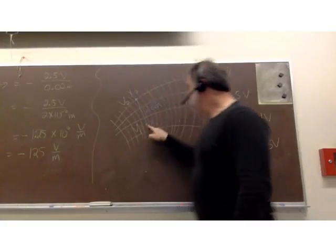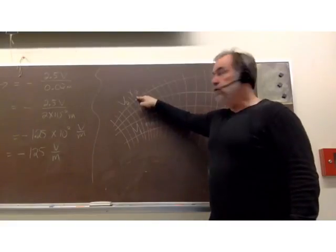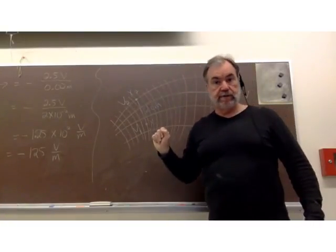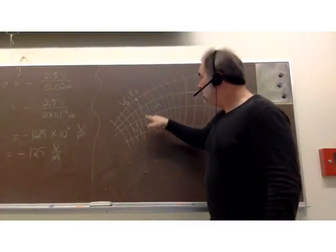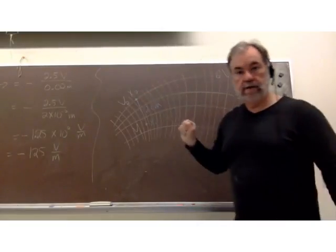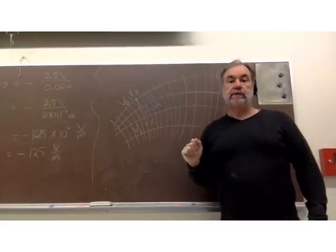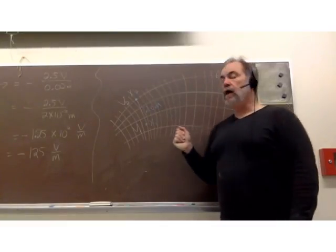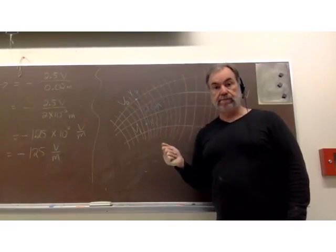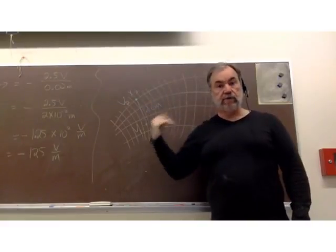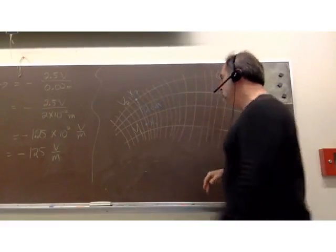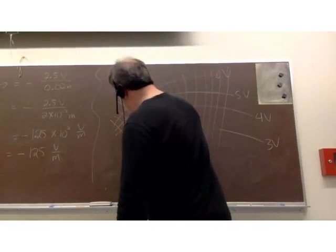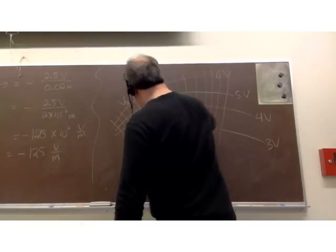The negative sign is telling us: in going from X1 to X2, the potential decreased — we went from six volts down to three volts. So the potential decreased in going from here to here. Here's the key: the electric field vectors will always point in the direction of decreasing electric potential — always from high potential to low potential. The potential is higher at one end and lower at the other, so the electric field vectors point in that direction.